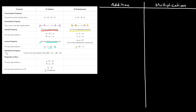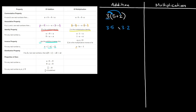Just a couple more properties. The distributive property says if a, b, and c are real numbers, then a times the quantity b plus c equals a times b plus a times c. So for a problem like 3 times the quantity 5 plus 2, you multiply 3 times 5 to get 15, and 3 times 2 to get 6, then add them together: 15 plus 6 equals 21.